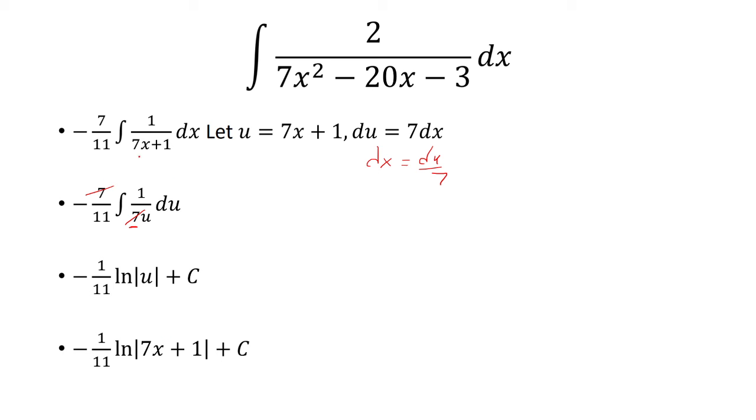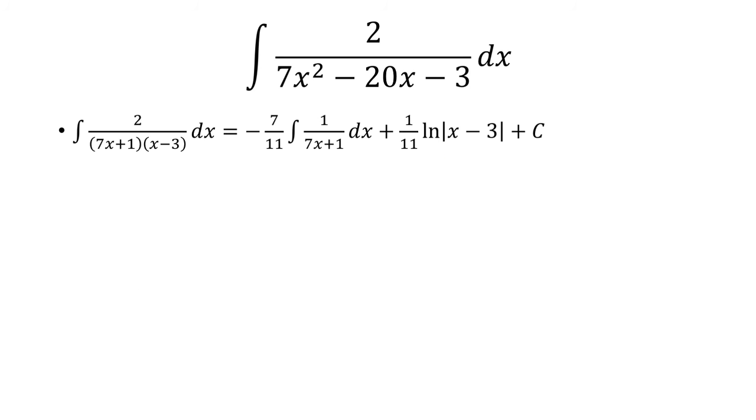u we said was the denominator, that was 7x plus 1. So I'm going to plug that back in. And now, this was the step before we worked on the integral, this integral right here. Using the results from the previous slide, this integral we said was negative 1 over 11 times ln of 7x plus 1. And so we're going to add it to the other answer, the 1 over 11 times ln of x minus 3. And then add a constant.